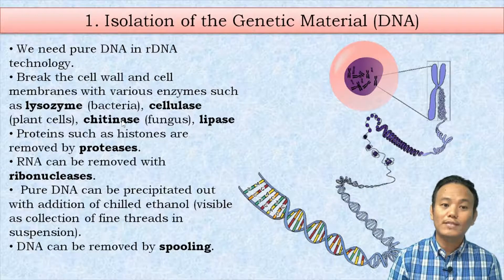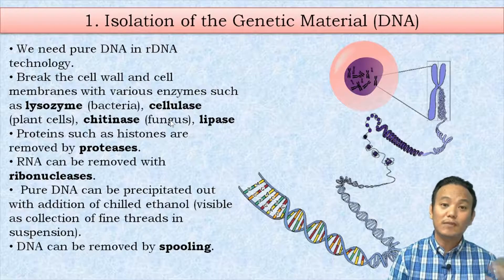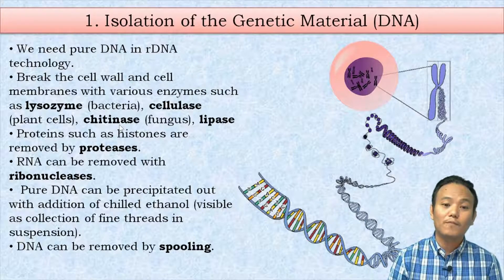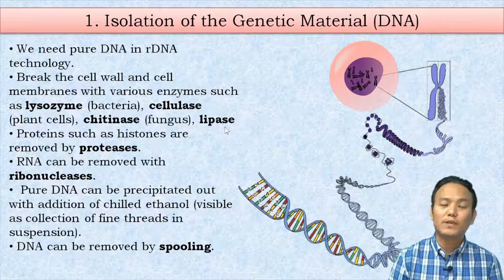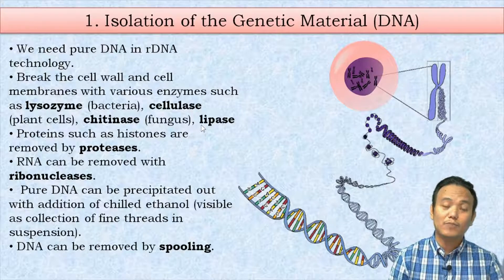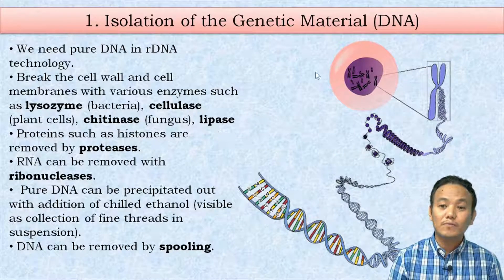We use lysozyme to break open the bacterial cell wall, cellulase to break open the plant cell wall, and chitinase to break open the fungal cell wall, since their cell walls have different chemical compositions. We then treat with lipase enzyme to break open the cell membrane, which is made up of a lipid bilayer.